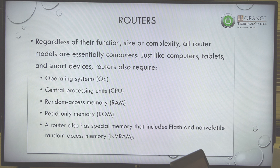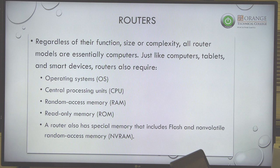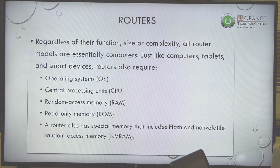The first piece of equipment we're going to look at is routers. The key thing to walk away with is that regardless of their size, cost, or complexity, all routers are basically computers. That is not true of a switch or many other devices, but a router is just like a computer. They're going to have an operating system — Linux is very popular, and Cisco has their own proprietary IOS, which is a Berkeley version of Unix.